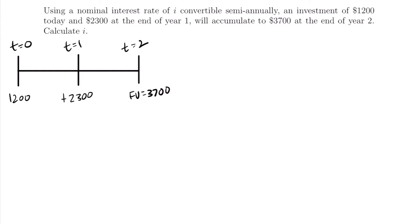Before solving, we need to identify the interest rate for this scenario. We're told we have a nominal interest rate of I convertible semi-annually, meaning it's an annual rate convertible semi-annually. It will be much easier to work with this as an effective semi-annual rate. Since M equals 2, we divide the nominal rate by 2, giving us an effective semi-annual rate of I/2.